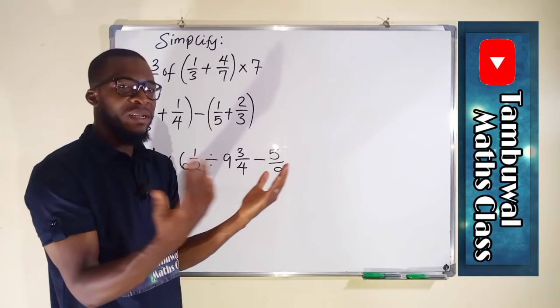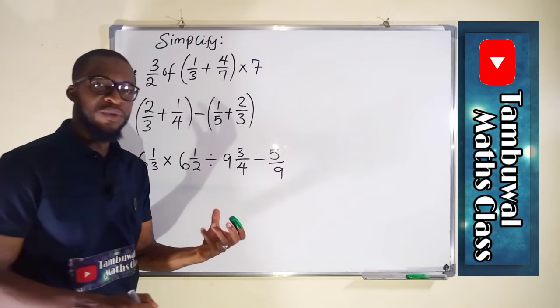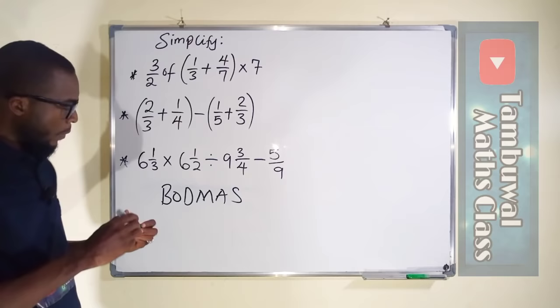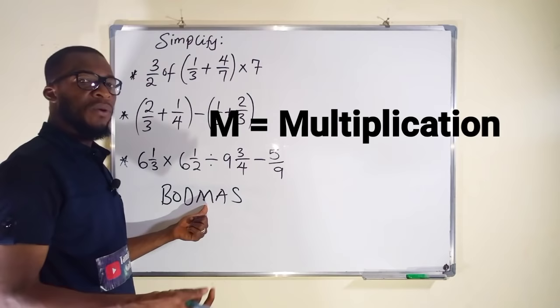We have a rule called BODMAS and PEMDAS, but in this tutorial I'm going to be using BODMAS. B stands for Bracket, O stands for Orders, D stands for Division, M stands for Multiplication, A stands for Addition, and S stands for Subtraction.